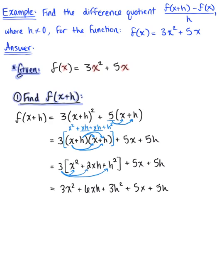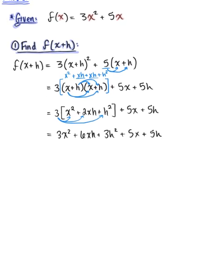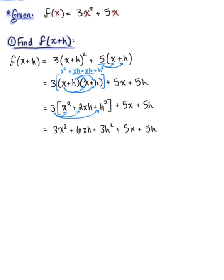So now we have both y values. We have the given f of x and we now have found f of x plus h. Step two of our difference quotient process is to find the difference of these two values, or the numerator of the difference quotient. We want to find f of x plus h minus f of x.